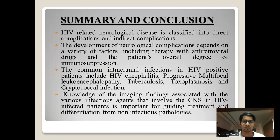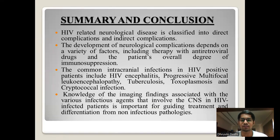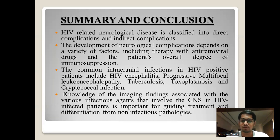In summary, HIV-related neurological disease is classified into direct and indirect complications. Development of neurological complications depends on factors including anti-retroviral therapy and the patient's overall degree of immunosuppression. Common infections in HIV-positive patients include HIV encephalitis, progressive multifocal leukoencephalopathy, tuberculosis, toxoplasmosis, and cryptococcal infections. Knowledge of imaging findings associated with various infectious agents involving the CNS in HIV-infected patients is important for guiding treatment and differentiating infection pathology. Thank you for listening.